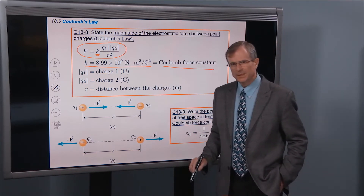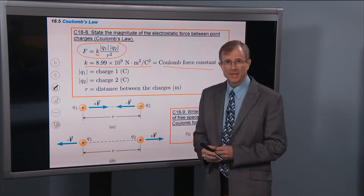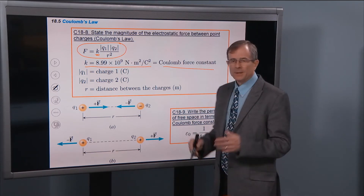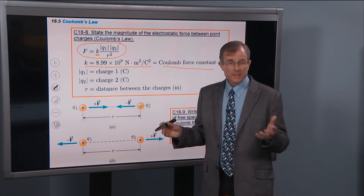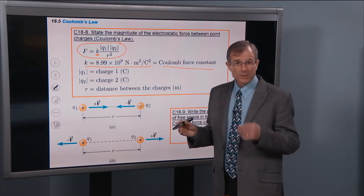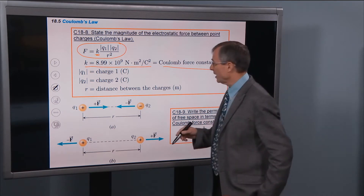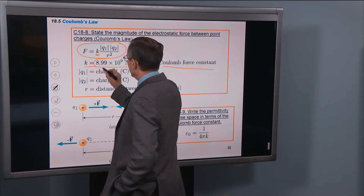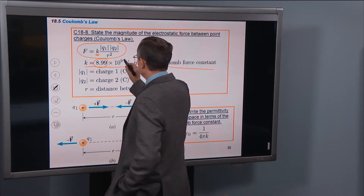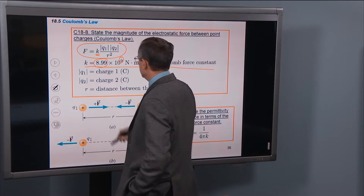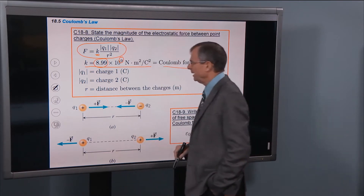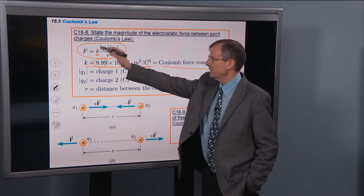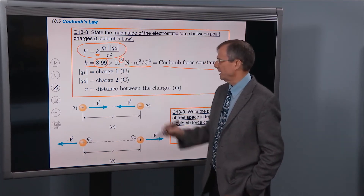Are you supposed to memorize that? Yes. Here's a really easy way to remember it: it's 9 times 10 to the 9. Approximately, this number is very, very close to 9. The units have to be whatever they need to be to make this equation work out.